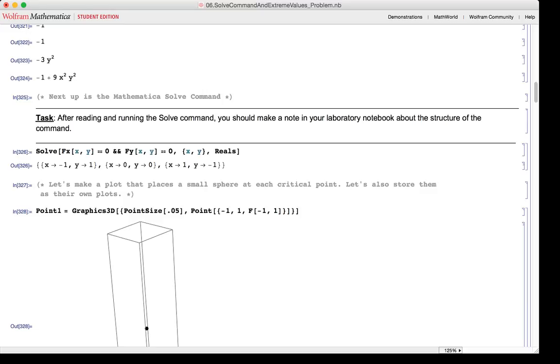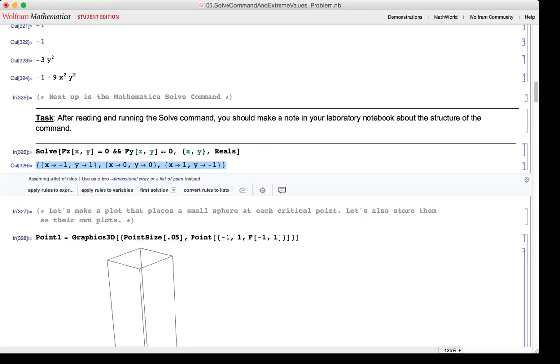The solve command is then used to set fx and fy, the two components of the gradient of this function, equal to 0. And x and y are solved for over the course of all real numbers. There are three ordered pairs that are produced by this: minus 1, 1, 0, 0, and 1, minus 1.